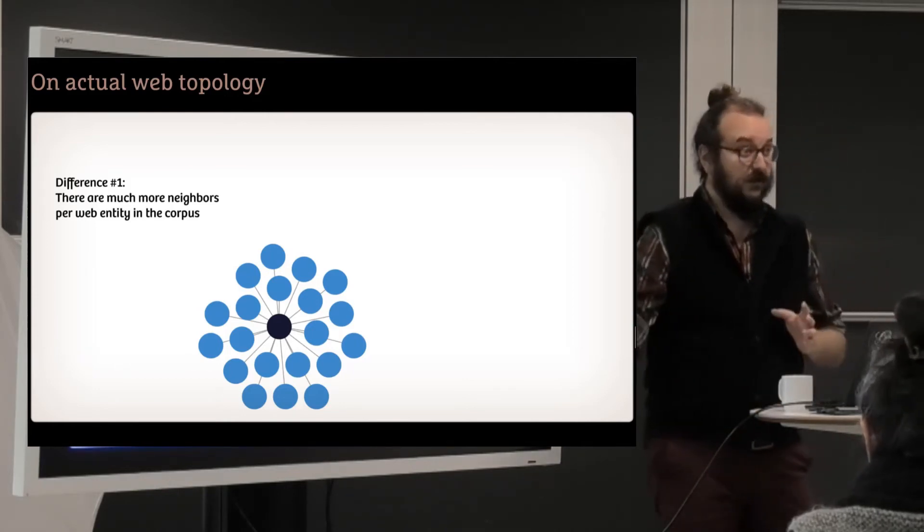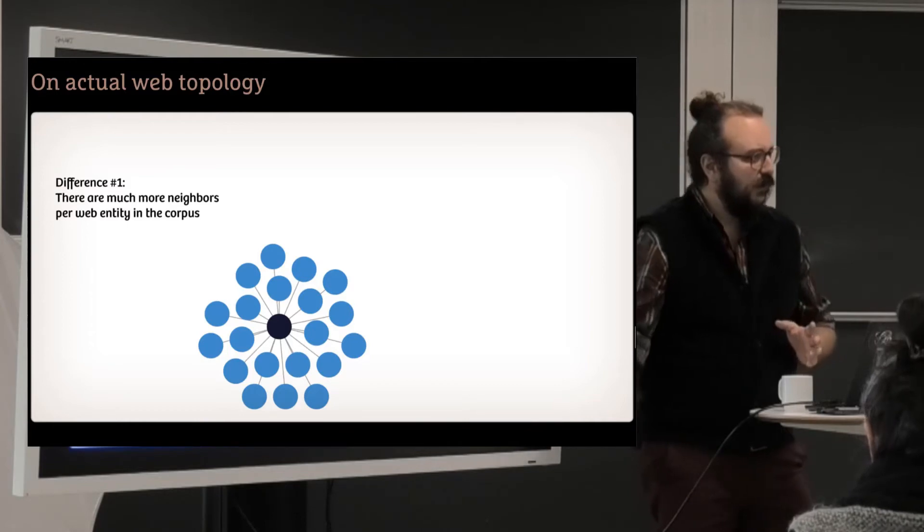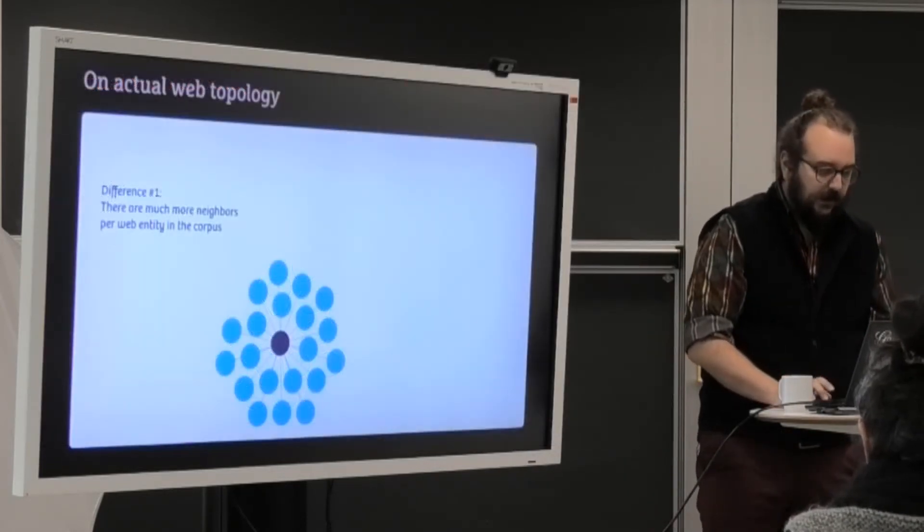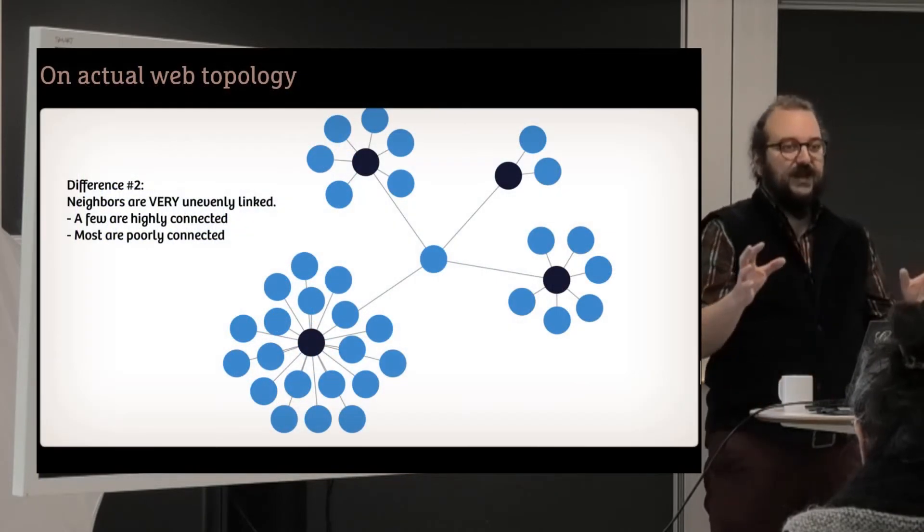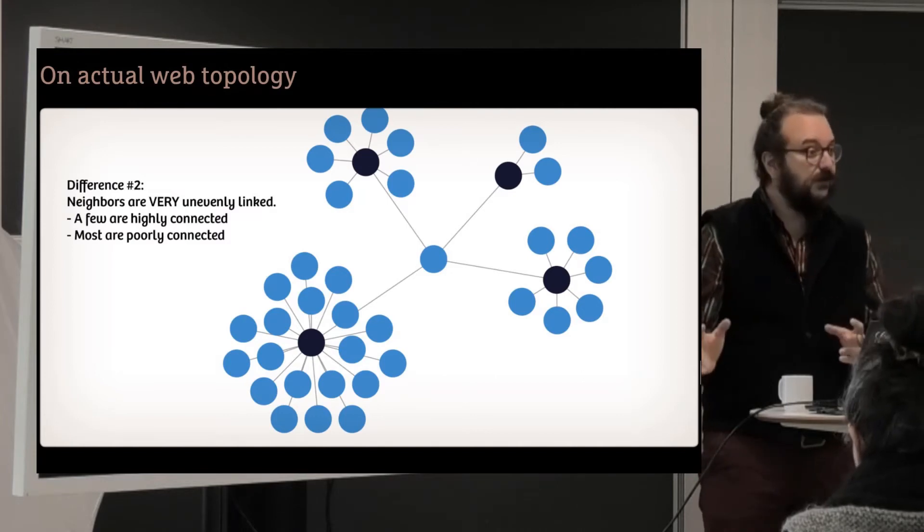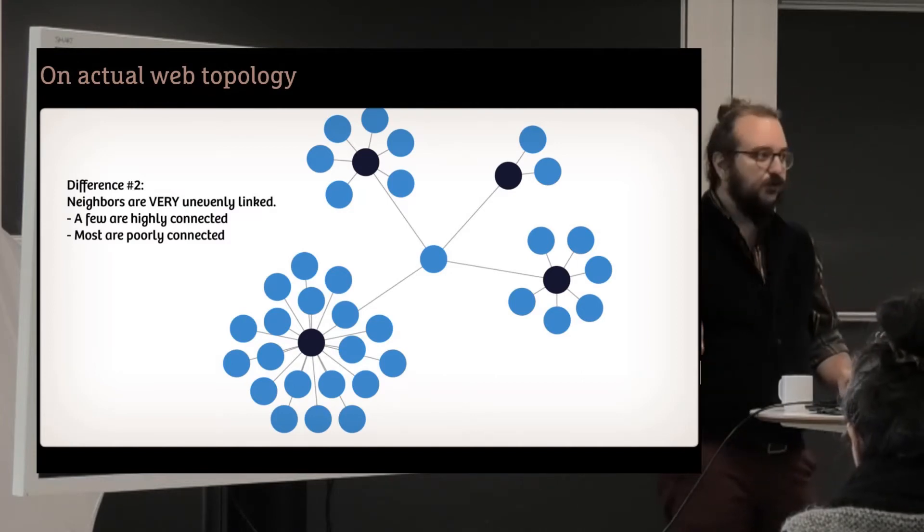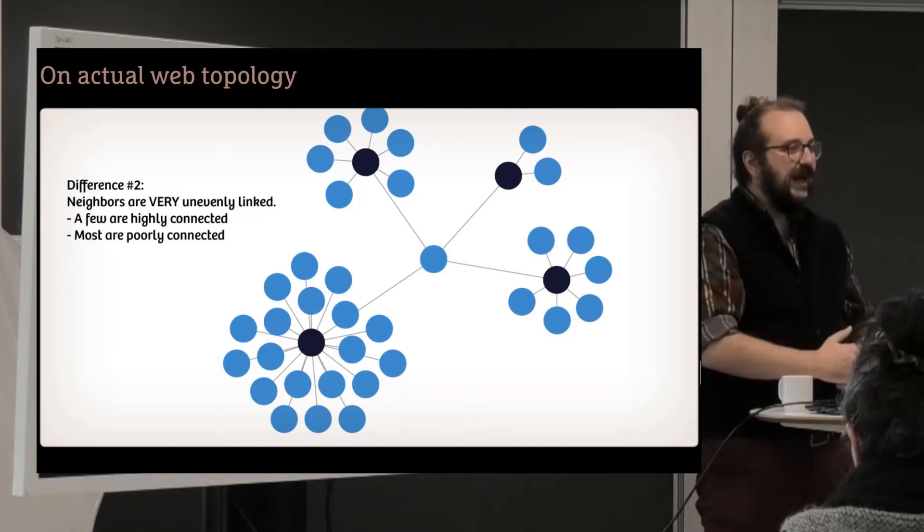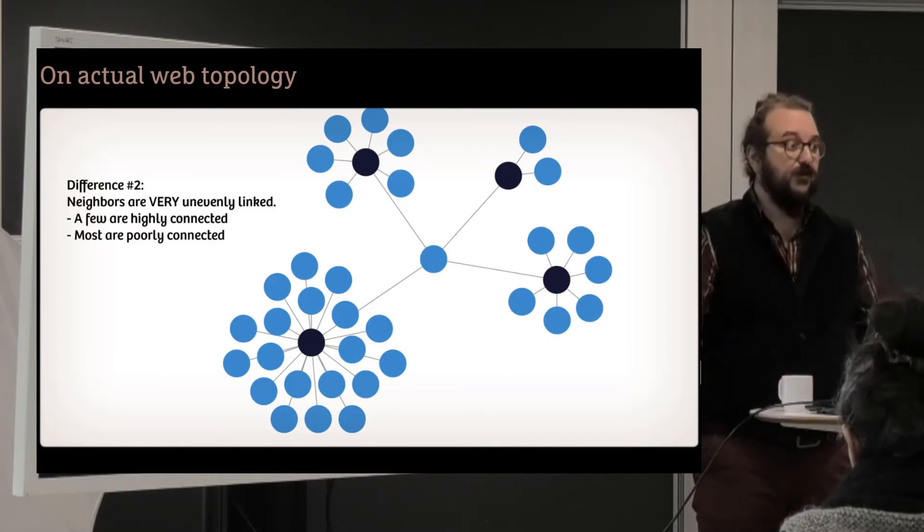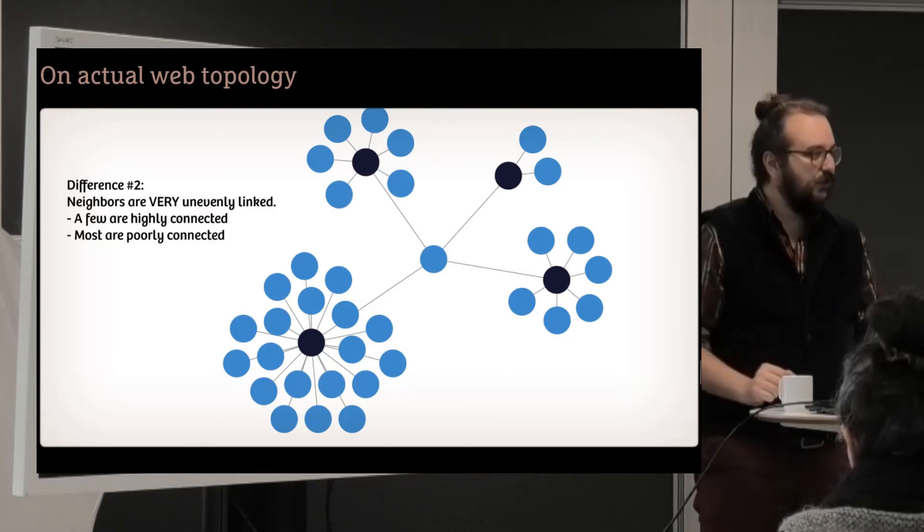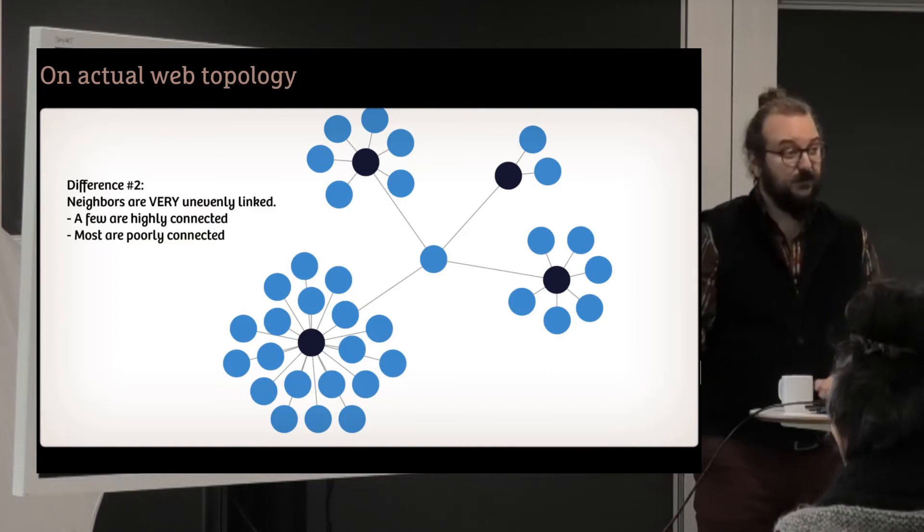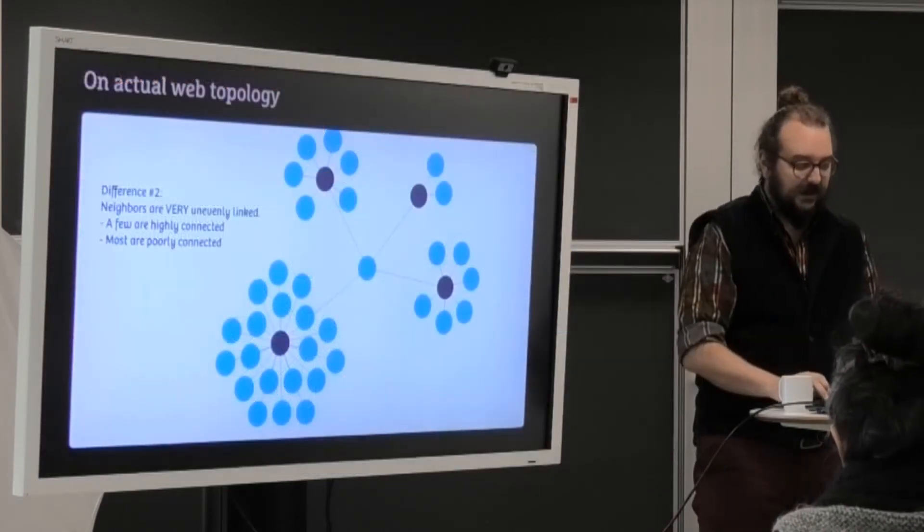Websites can have many, many neighbors. And the number of links of these neighbors are extremely different, as we have seen earlier. You know that Wikipedia has a huge amount of links compared to a blog. Orders and orders and orders of magnitudes more. Some neighbors are hugely cited, but most neighbors are not hugely cited.